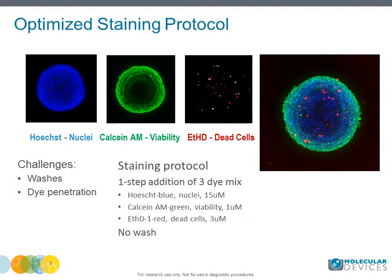3D assays present a number of other challenges, some related to efficiency of dye penetration and washes. A 1-step dye mixture addition was used to eliminate the need for fixing cells or repeated washes. Calcein-AM was used to measure metabolically active cells, viability, and a variety of morphological parameters.